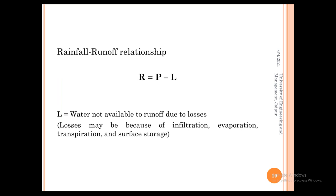An important relationship is the rainfall-runoff relationship: R equals P minus L, where R means runoff, P means precipitation, and L means losses — water not available to run off. These losses may be due to infiltration, evaporation, transpiration, or surface storage. Runoff will only start after all losses have already occurred.